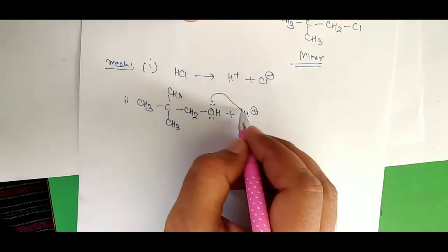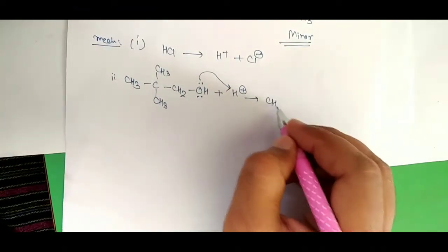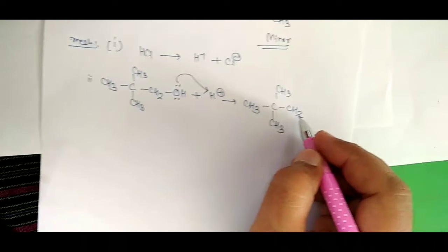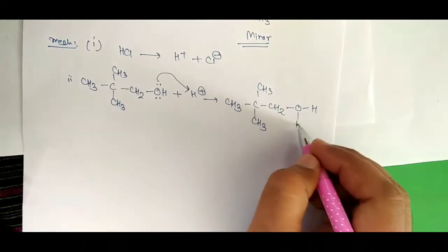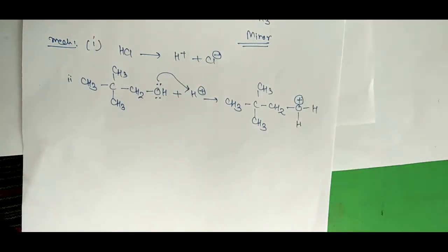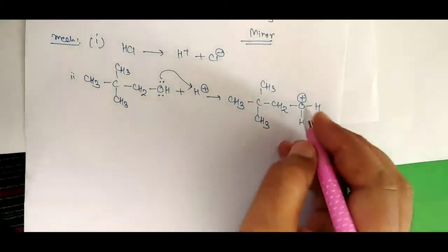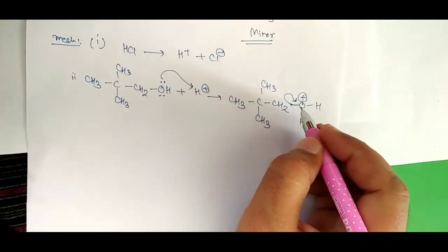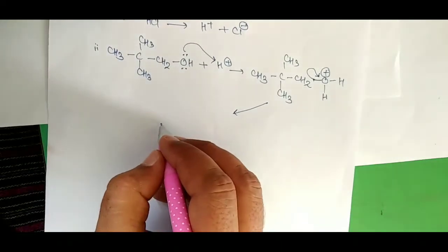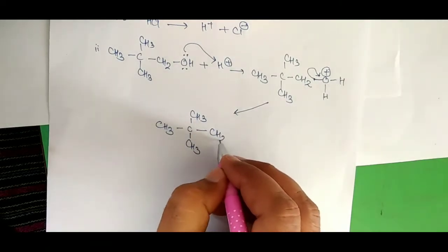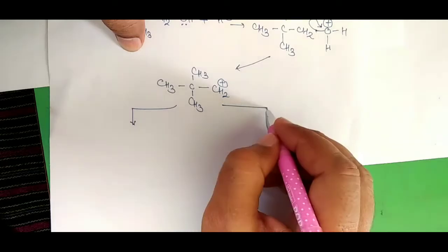We have 2,2-dimethyl-1-propanol, and HCl will generate H⁺ — the proton. This oxygen will donate its lone pair to this proton. Now we get CH3, CH3, CH3, CH2, OH₂⁺. Because oxygen has donated its lone pair to the proton, this oxygen will carry a positive charge. Being an electronegative element, oxygen withdraws electron density toward itself, so the CH2 carbon now carries a positive charge.